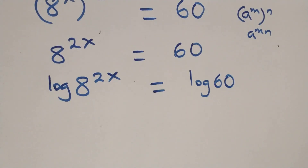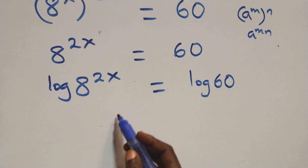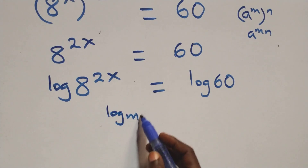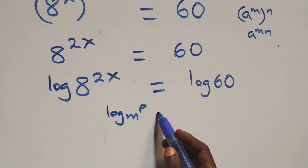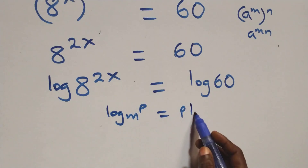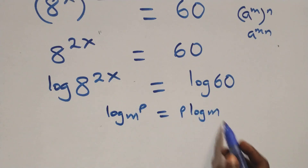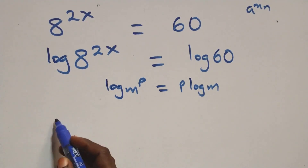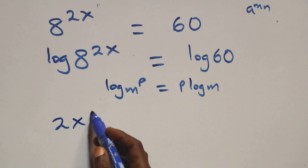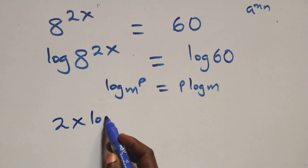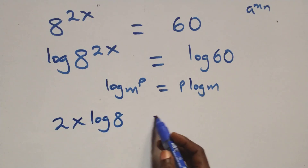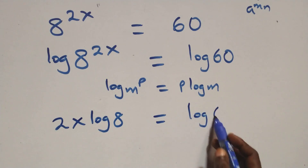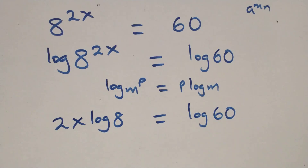The next step here, to apply the power law of logarithm: when we have log m raised to power p, this is the same thing as p log m. At this here, we have 2x log 8 equals to log 60 on this side.